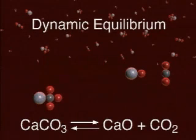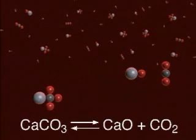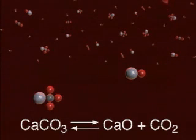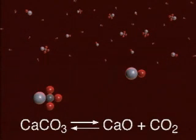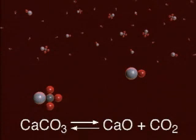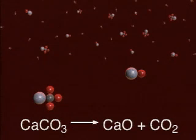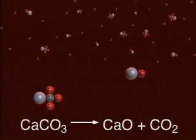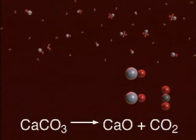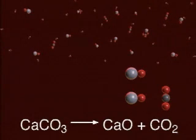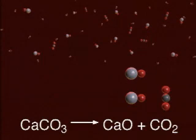Now suppose most of the carbon dioxide is removed from the system and the system is resealed. The rate of synthesis of calcium carbonate from calcium oxide and carbon dioxide will slow down and almost stop. However, the decomposition of calcium carbonate to form more calcium oxide and carbon dioxide will continue. As the level of carbon dioxide increases, the reverse synthesis of calcium carbonate will again begin.